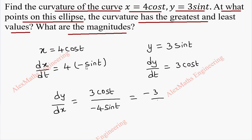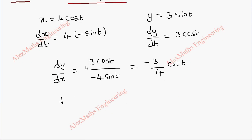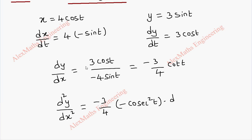That is, dy/dx can be written as −(3/4)cot(t). For the second differentiation, d²y/dx² — we keep −3/4 as it is, and the differentiation of cot(t) is −csc²(t). By chain rule, we multiply by dt/dx at the end, which is the reciprocal of dx/dt.